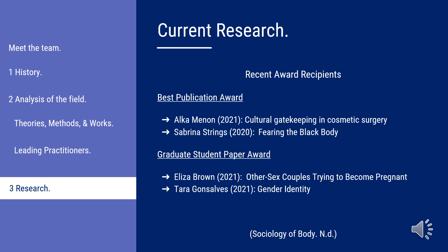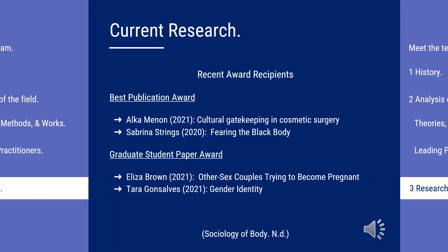What does the future hold for research in embodiment? The American Sociological Association, also known as ASA, as recently as 2009 created a new field within their organization called Body and Embodiment. In creating this new section, the ASA has awarded Best Publication and Graduate Student Paper awards to foster academic discussion within the field.